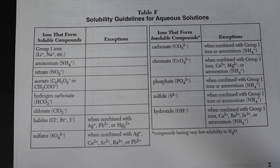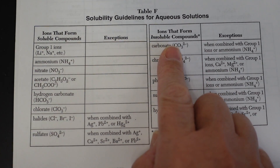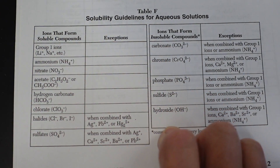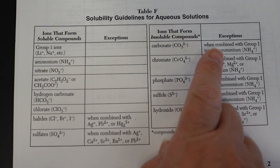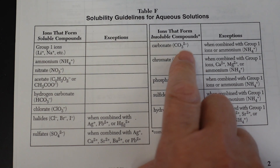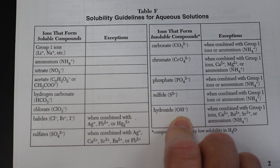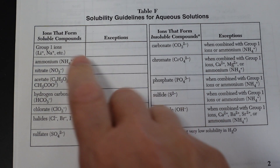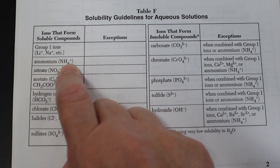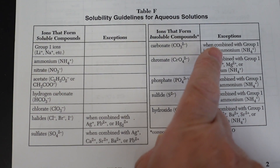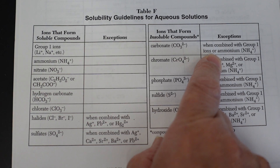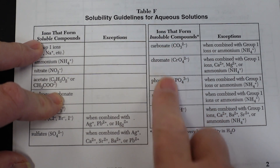But any other ion combined with sulfate will not form a precipitate. On the other side of table F, we have these ions. These ions, when in a compound, are typically insoluble. However there are exceptions. When you combine them with positive group one ions or positive ammonium ions, they will not form precipitates, because both group one ions and ammonium are exceptions to every one of these.